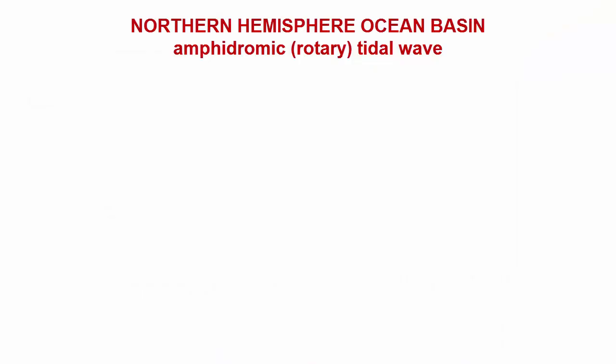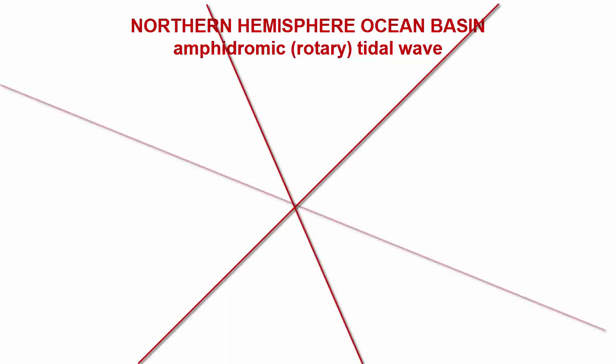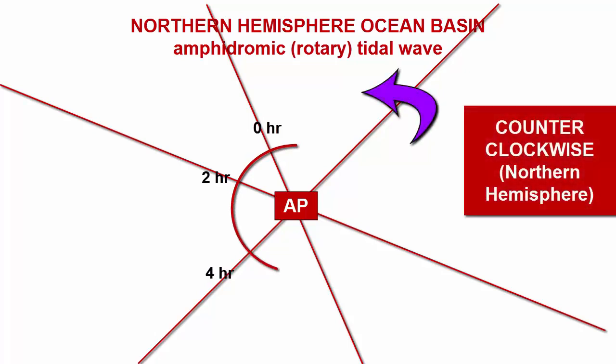Let's piece together again how you would draw an idealized amphidromic system in a square ocean basin in the northern hemisphere. First, you'd start by creating the spokes of your wheel, the cotidal lines, all coming out from the amphidromic point center. Be sure to include enough to get a divisor of 12. Then we can pick a starting point for our wave and demonstrate how it moves counterclockwise, in this case jumping two hours for each spoke until we get back where we started 12 hours and 25 minutes later.